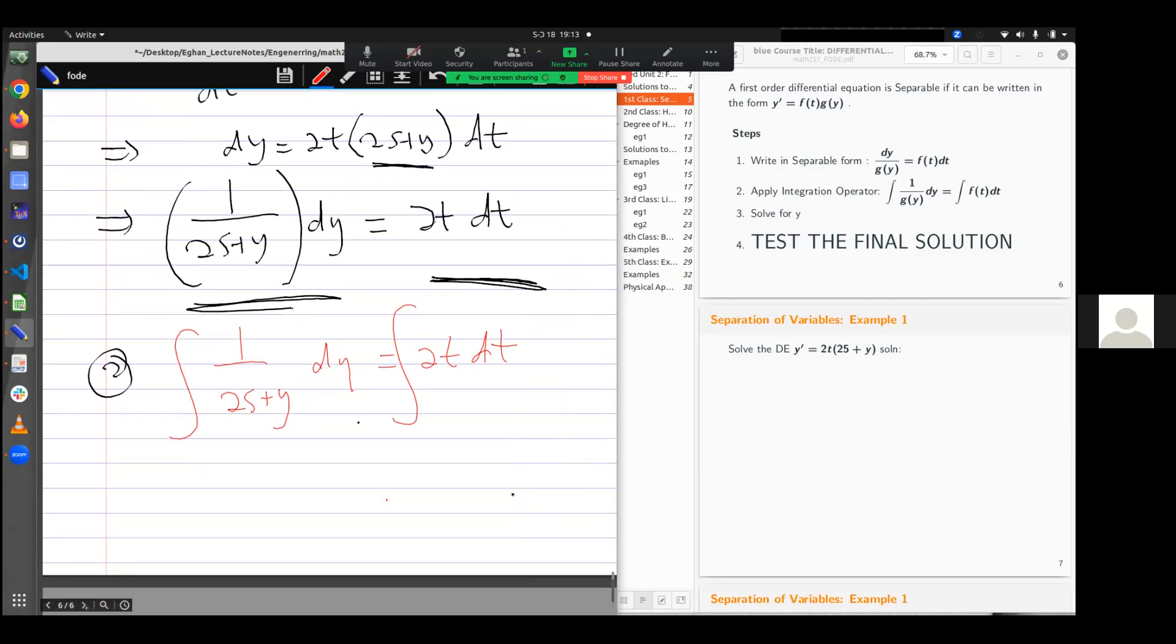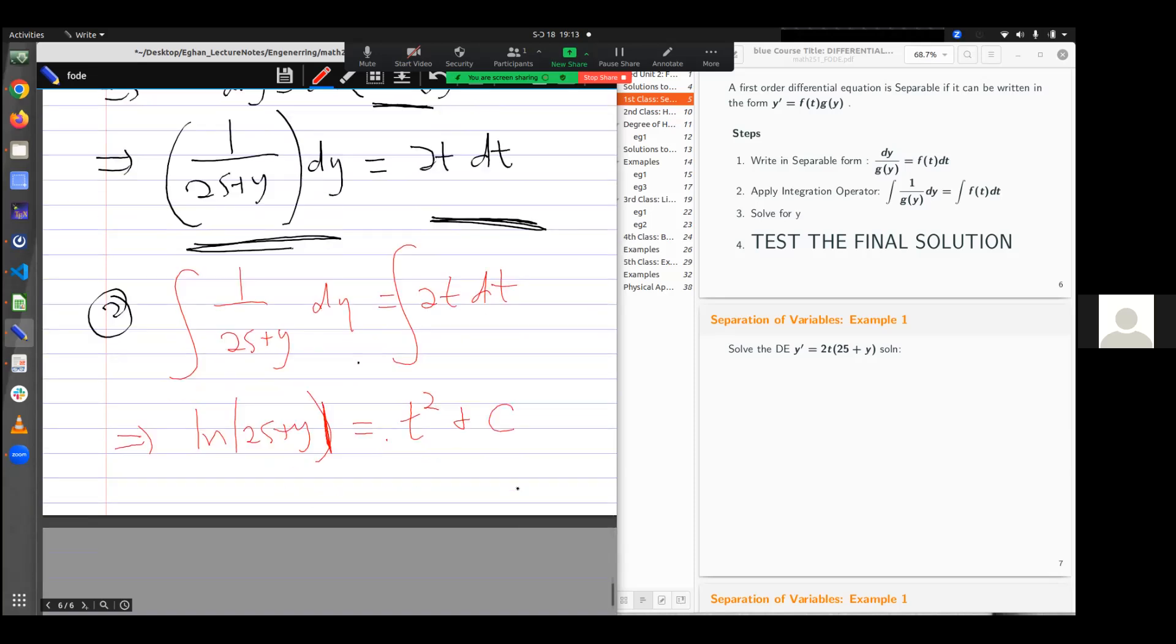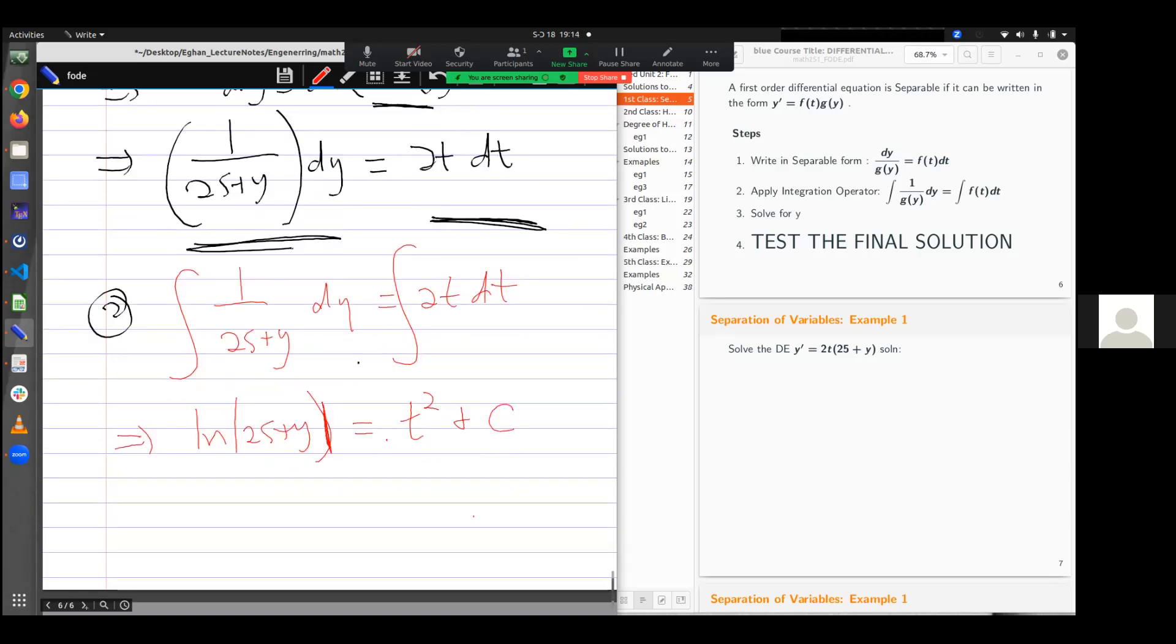It means that if I integrate this aspect of my equation, I have ln(25 + y) is equal to t² plus a constant of integration c. You know why I'm getting t square? It's integration. Now I need to solve for my unknown. I'm done with the integration here. The third is to solve for my unknown.